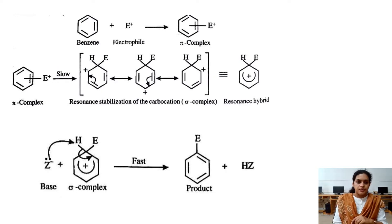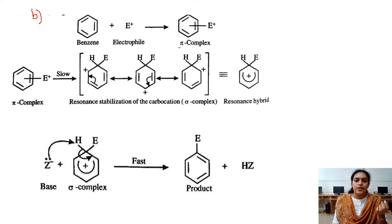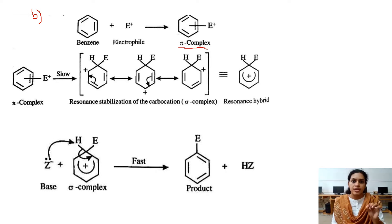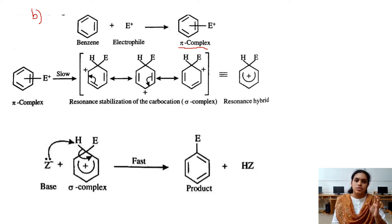In the second step, the electrophile first gets coordinated or interacts with the electron cloud — the electron density of benzene — to give a pi complex. At this stage, the electrophile is not directly attached to any of the atoms of the benzene ring; instead it gets attached to the pi electron cloud to give a pi complex.